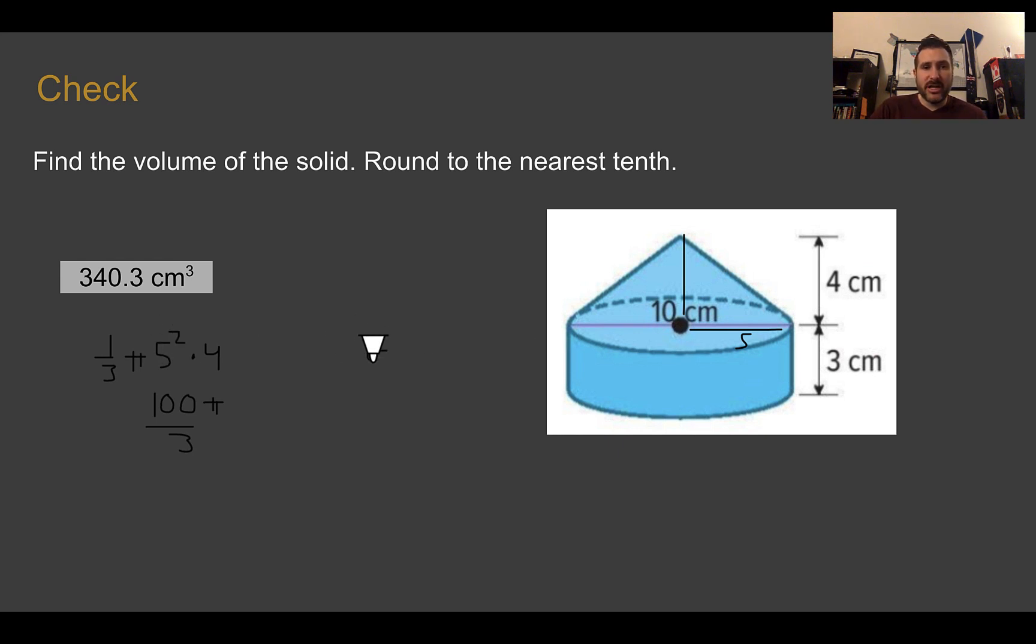For the cylinder, we have the same radius and we have π. This time, our height, though, is 3. So 25 times 3 is 75π. Now for this one, I'm adding the two things together. So, my final thing, after I add them together and multiply by 3.14, then I get 340.3. My units would be cubic centimeters.